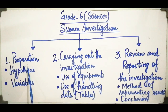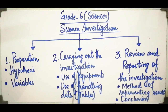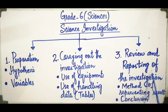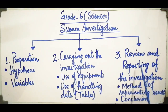A scientific investigation has three main parts. Number 1: Preparation. Number 2: Carrying out the investigation. Number 3: Reviewing and reporting of your results, and finally drawing a conclusion by using different methods and techniques.